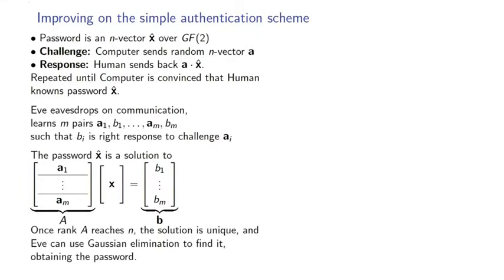The password is a solution to a matrix vector equation consisting of the challenges and the responses. And once the rank of the matrix reaches n, the number of bits in the password, the solution is unique. So Eve can use Gaussian elimination to find the password.